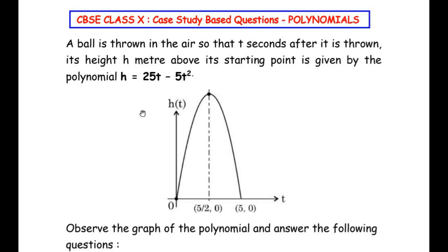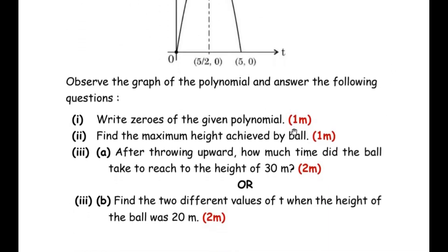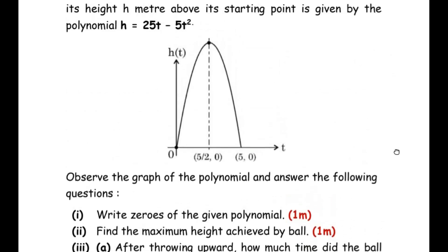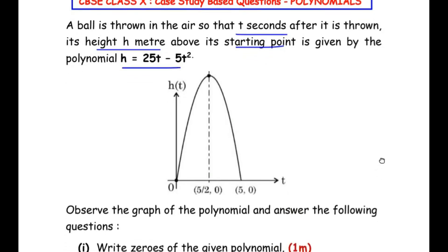Hello and welcome to my channel. In this video we are going to solve a case study based question from the polynomials chapter. This question has three sub questions — the first and second are for one mark, and the third is for two marks. It also has an 'or' question. A ball is thrown in the air so that t seconds after it is thrown, its height h meters above its starting point is given by the polynomial h = 25t - 5t².